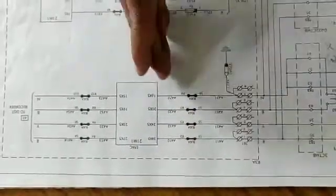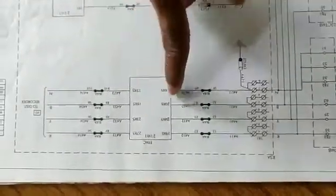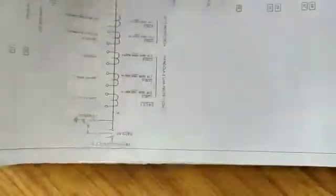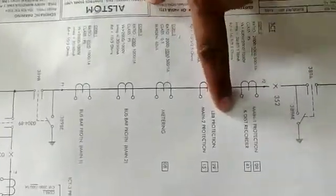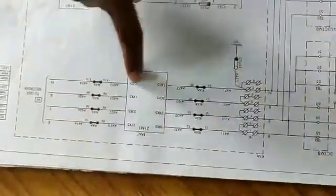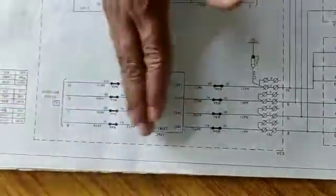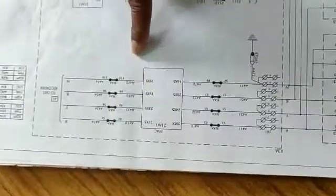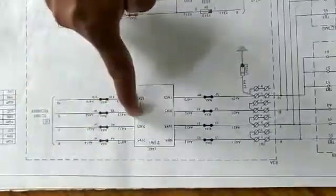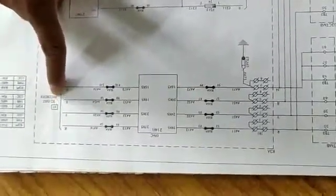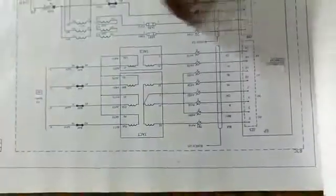Test blocks are used for testing purposes and will be discussed later. Since core 5 is used for both main 1 protection and disturbance recorder, we cannot terminate the CT wiring at the relay point alone. If it were used only for main 1 protection, we would terminate there. But because it also feeds the disturbance recorder, all wires are taken from here and continued to page number 41 for the disturbance recorder.